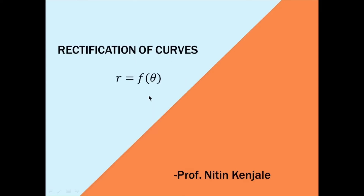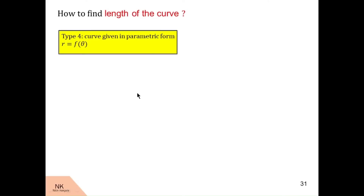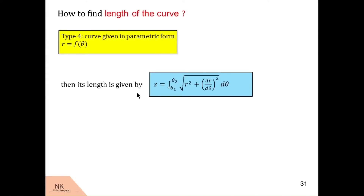So let us first recall the formula. The length of the curve given by the equation r is equal to f of theta is given by s is equal to integral of square root of r square plus dr by d theta square, d theta, over the limit theta 1 to theta 2.